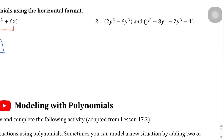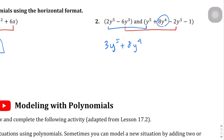For the second question on this page using horizontal format: 2y to the power of 5 lines up with the other y to the power of 5. Then 6y cubed goes with the other y cubed term. The y to the power of 4 doesn't go with anything so we leave that. The constant negative 1 doesn't pair with anything either. Adding: 2y to the power of 5 plus y to the power of 5 gives 3y to the power of 5; plus 8y to the power of 4; then 6y cubed and negative 2y cubed gives minus 8y to the power of 3; and finally the constant minus 1.